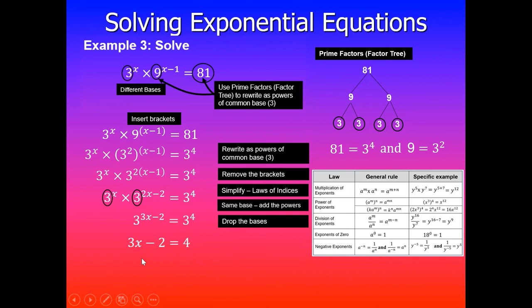So this gives us 3x - 2 = 4, and then we solve for x. We'll move negative 2 to the other side, so minus 2 becomes plus 2. 4 + 2 becomes 6. So 3x = 6. Dividing by 3 on both sides gives you x = 2.